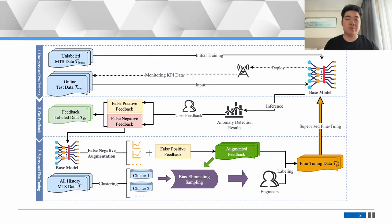To solve these problems, we propose Anonymous Tuner, a supervised fine-tuning framework for unsupervised KPI anomaly detection. By ingeniously generating similar false negative cases, Anonymous Tuner enriches the feedback loop, making each piece of feedback count even more. Furthermore, its two-stage active learning mechanism meticulously minimizes data contamination, ensuring that feedback truly enhances the system's performance. Real-world experiments with a top-tier global internet service provider have shown that Anonymous Tuner significantly outperforms existing methods.